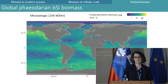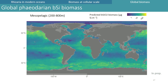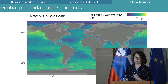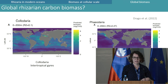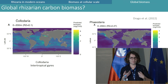This is the global map of the predicted Phaeodarian silica biomass in the mesopelagic layer. The patterns are the same as in the epipelagic layer, but paying attention to the scale, the mean value is also about 100 micrograms of silica per cubic meter. The most striking finding from these two maps is that the biomass in the epipelagic layer is equivalent to the biomass in the mesopelagic layer — where diatoms are absent.